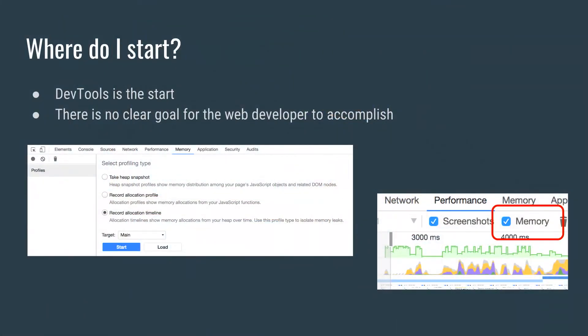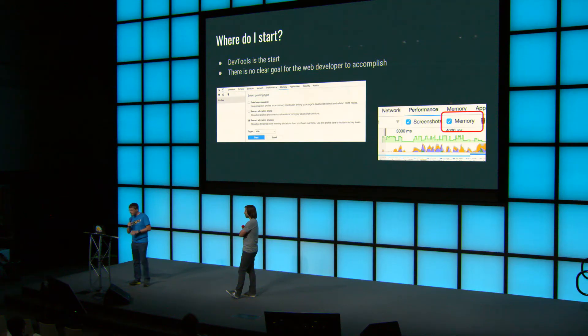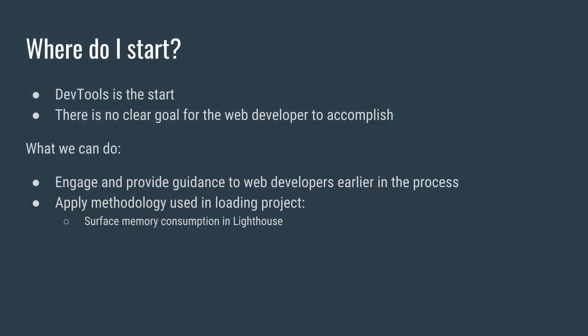Let's start with the most important question: where do we start as a web developer to actually reason about memory? It turns out the first step is using DevTools. In DevTools you have the memory tab, and you also have the option to analyze memory on the performance tab with a checkbox. What stands out is that there is no clear indication for the web developer of what to shoot for. When can a web developer declare mission accomplished? It's not there.